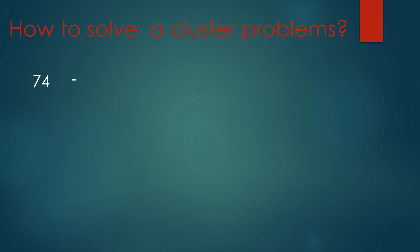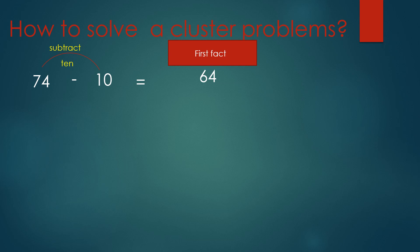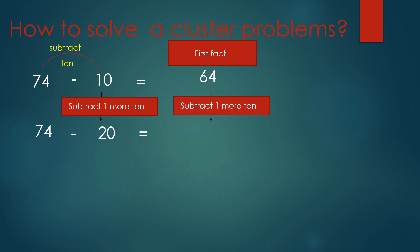How to solve cluster problems? Let's see. We have 74 minus 10. We are going to subtract one 10. 74 minus 10 equals 64, and this is the first fact we have. Now we are going to subtract one more 10, which means we are going to subtract 20. So 74 minus 20 equals...